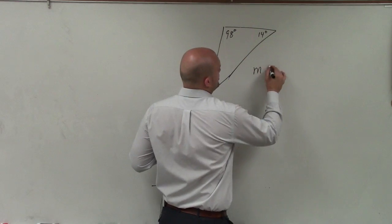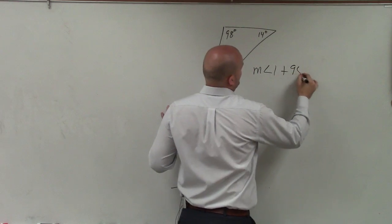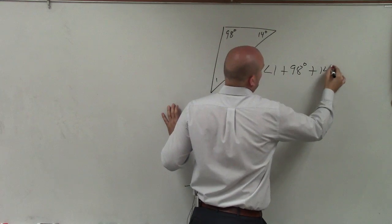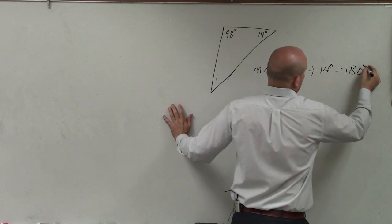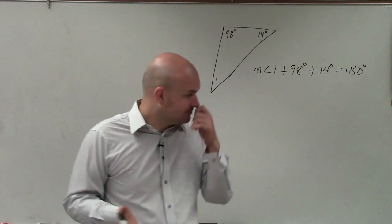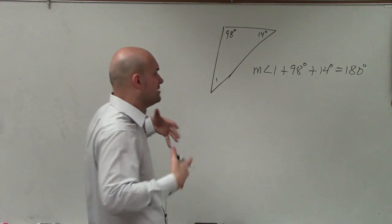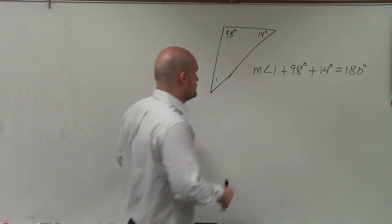So I'm going to write an equation that measure of angle 1 plus 98 degrees plus 14 degrees equals 180 degrees. And this just helps me make sure that I'm doing exactly what I need to do correctly.